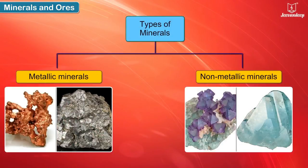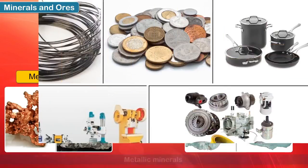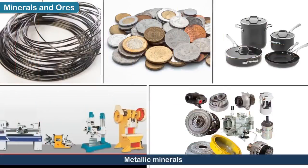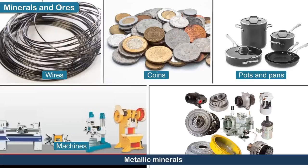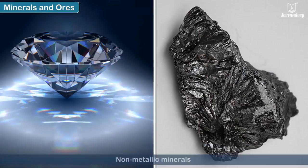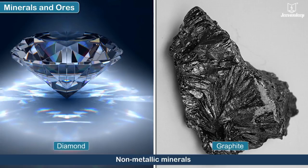Minerals are of two types: metallic minerals, which are those that contain metals, and are used to make wires, coins, pots and pans, machines, and parts of vehicles. Minerals like diamond and graphite are non-metallic minerals.